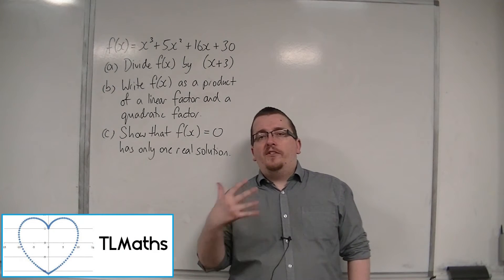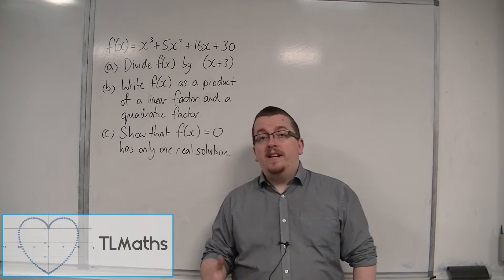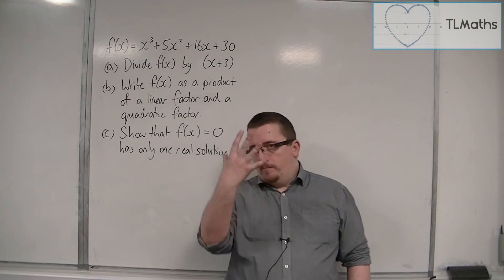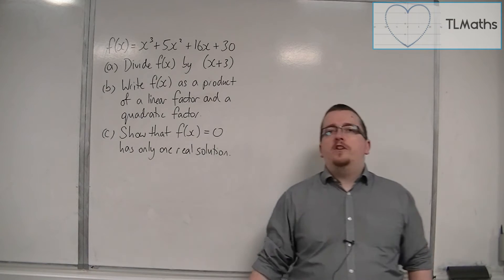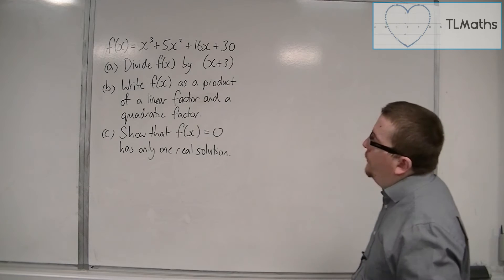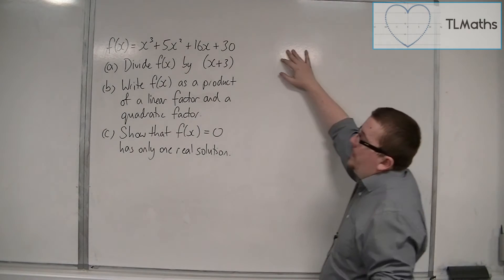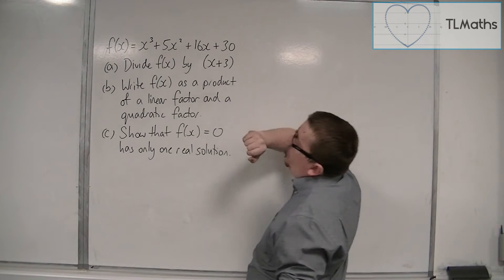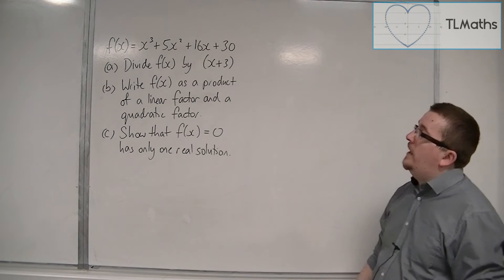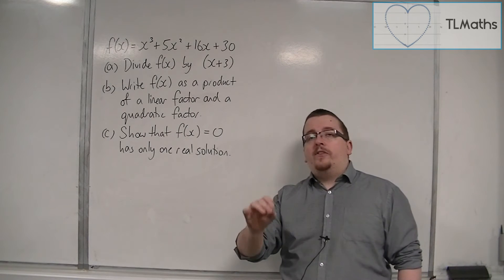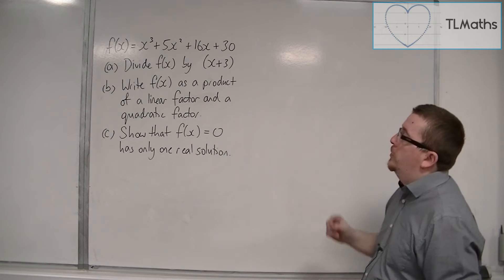I'm going to work through an exam-style question here, pointing out the different sections that you might face. What we're first given is that f(x) = x³ + 5x² + 16x + 30. So f(x) is a cubic polynomial.